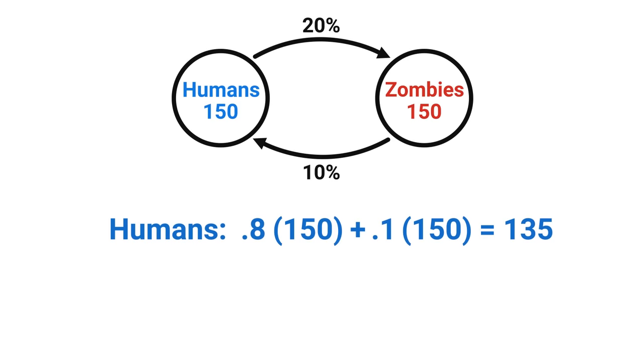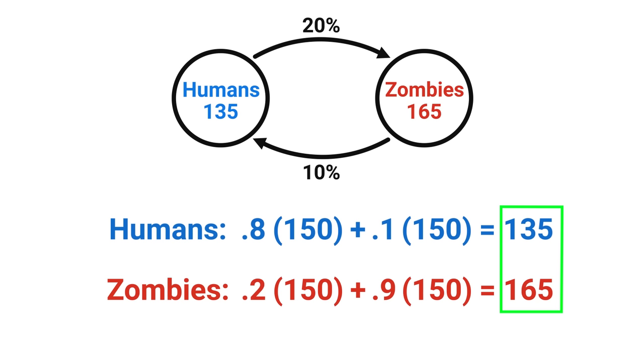For the new total of zombies we would take the 20% of humans that got infected plus the 90% of the 150 zombies that are not cured, giving us a total of of course 165 since these two numbers add together must remain 300. But we want to know what happens after a long time so we got to keep going. After another hour we write the same percentages except now the number of humans is 135 instead of 150 and for the zombies we got 165 instead of 150. This now puts 125 for the humans and 175 for the zombies. So we seem to keep losing humans but will this continue?